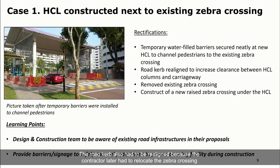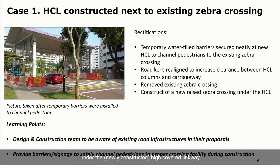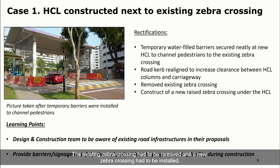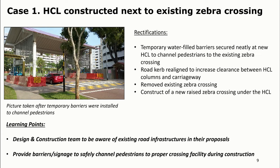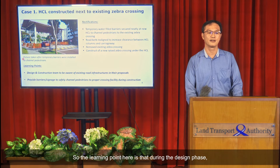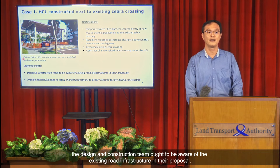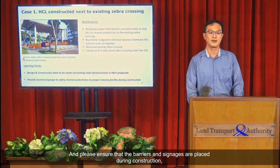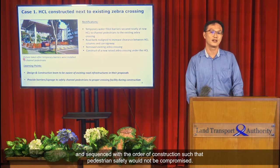The road curb also had to be realigned because the contractor later relocated the zebra crossing under the newly constructed HCL, which required realigning the curbs, removing the existing zebra crossing, and installing a new one. The learning point here is that the design and construction team must be aware of existing road infrastructure in their proposal. Ensure that barriers and signage are placed during construction, and sequence construction activities so that pedestrian safety is not compromised.